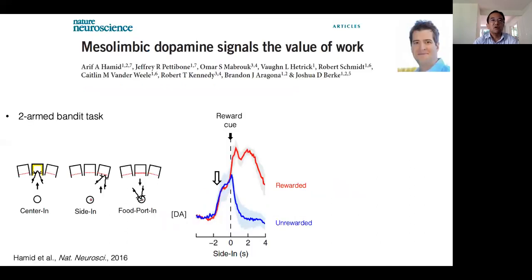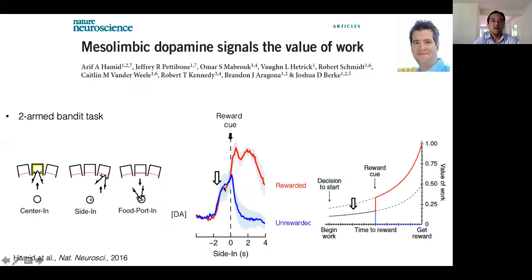Similar ramping signals were observed in a simple decision making task. In this task, the animal chose left or right response ports based on probability of reward associated with the two ports. A ramping dopamine signal was observed before the animal received the feedback about reward. In this study, again, they proposed that dopamine signals the value of future rewards as illustrated in this figure. The value of future reward gradually goes up as the animal gets closer to reward. This gradual increase in value may correspond to this dopamine signal.